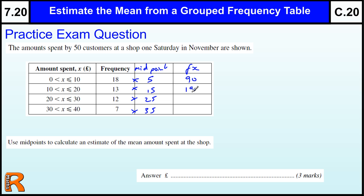18 times 5 is going to be 90. 13, 15 is 195. 12, 25, 425s are 100. So that's 300. And that's going to be 245. Let me add those up to get 830. Add the frequency up to know how many things you've got to divide by. And that should add up to 50 because we've got 50 customers.